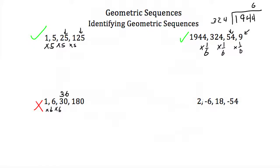Now let's look at our last one. We have 2, negative 6, 18, and negative 54. Well to get from 2 to negative 6, I would have to multiply by negative 3. If I take negative 6 and multiply it by negative 3, I get positive 18. If I take positive 18 and multiply by negative 3, I do get negative 54. So this is a geometric sequence. Another hint that this might have been a geometric sequence is seeing that the positive and negative signs alternate — that just means you're multiplying by a negative number.